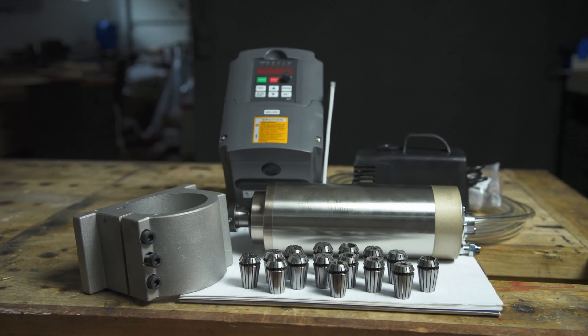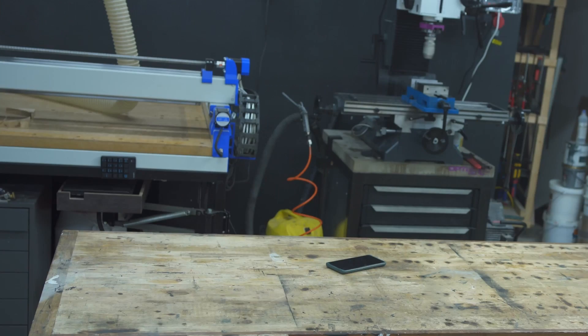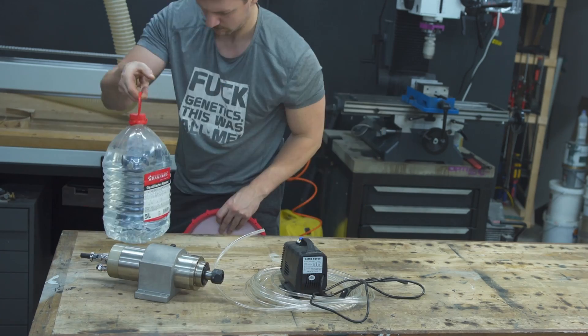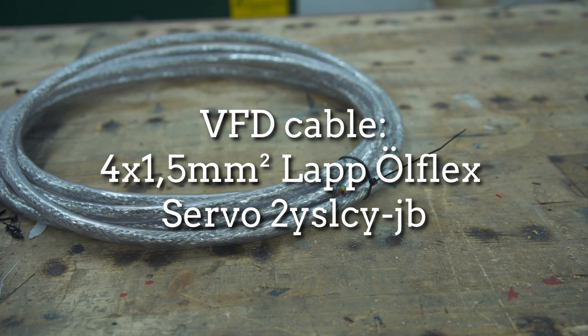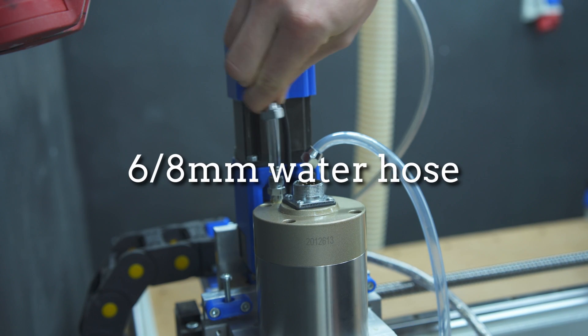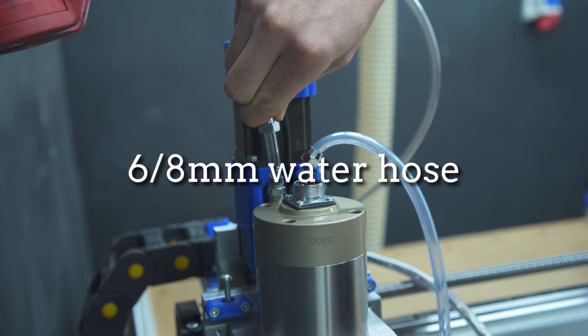In addition to what comes in the 2.2 kilowatt spindle kit we also need some distilled water, a bucket, an enclosure for the VFD, some antifreeze, a double shielded VFD cable and a 6 by 8 millimeter water hose since the included one is only 5 meters long.